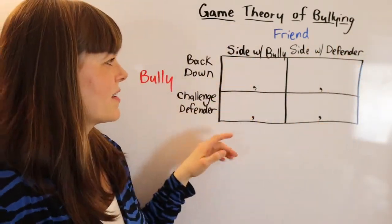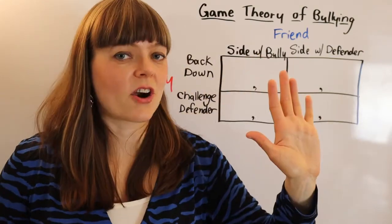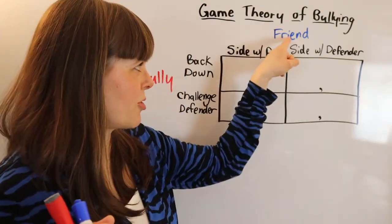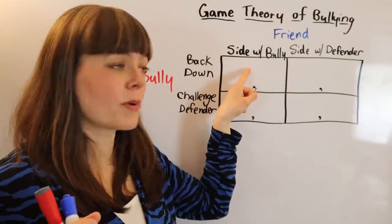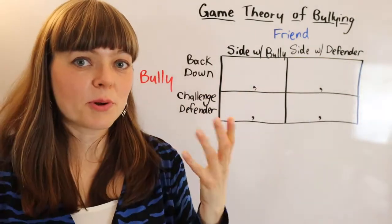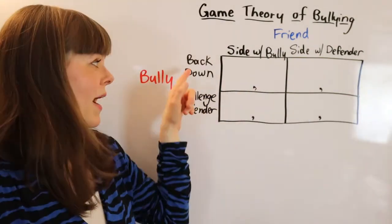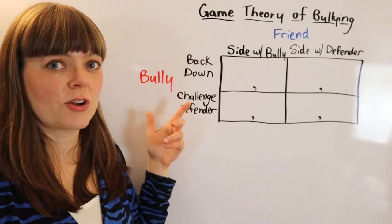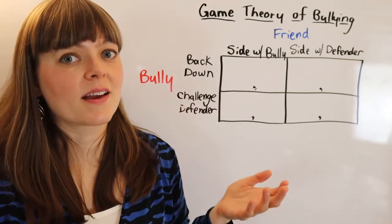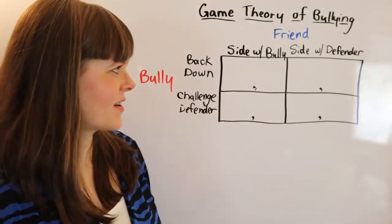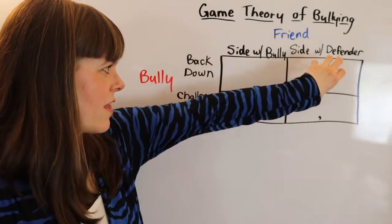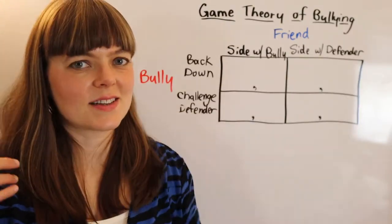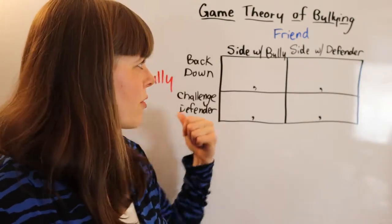The second game assumes the bully has already bullied, one member of the group has already stood up to defend the victim, and each person is deciding: do I side with the bully or side with the defender? The bully must then decide: do I back down now that one person has confronted me, or do I challenge the defender — which could take the form of bullying the defender? We need to fill this out with payoffs by analyzing the incentives for both players.